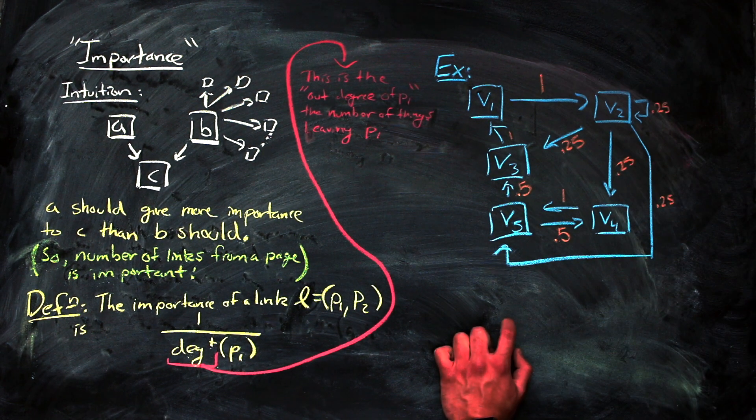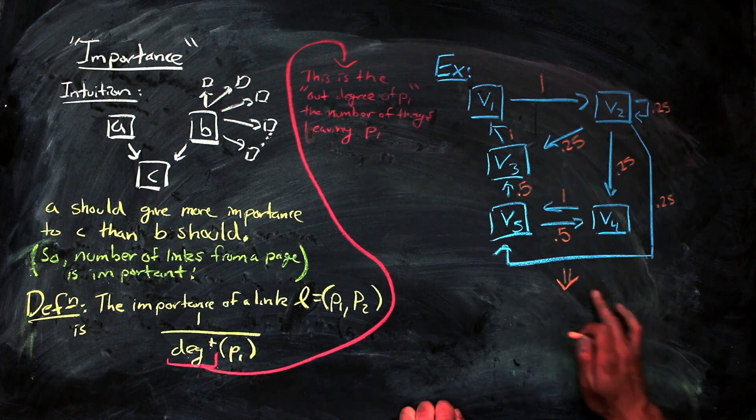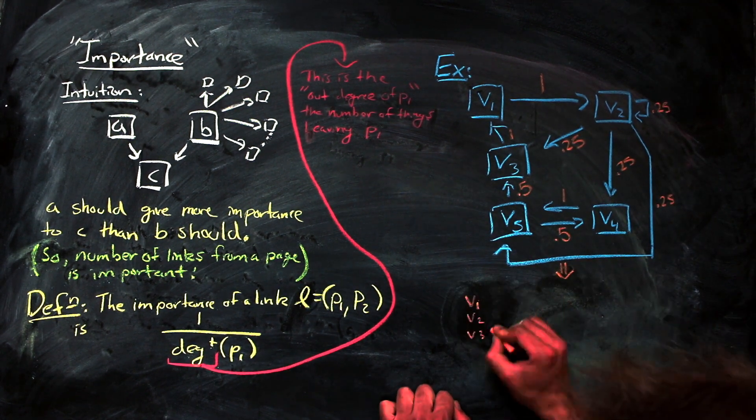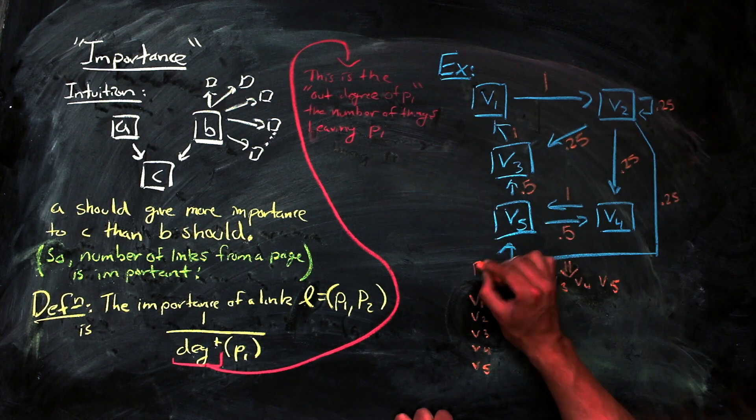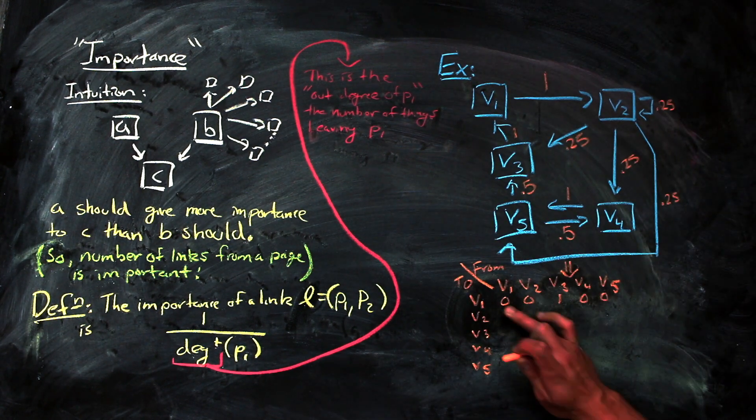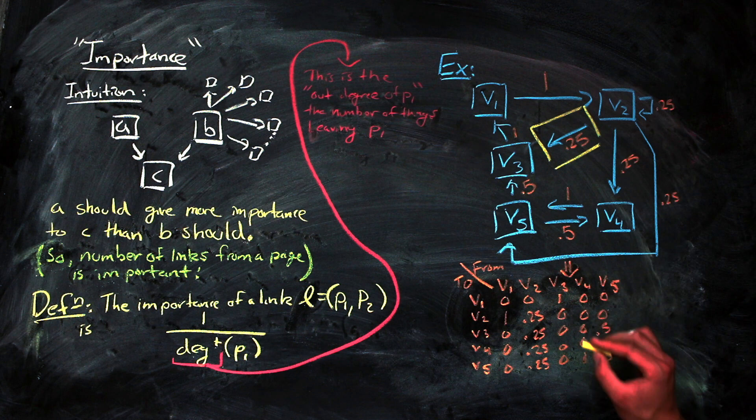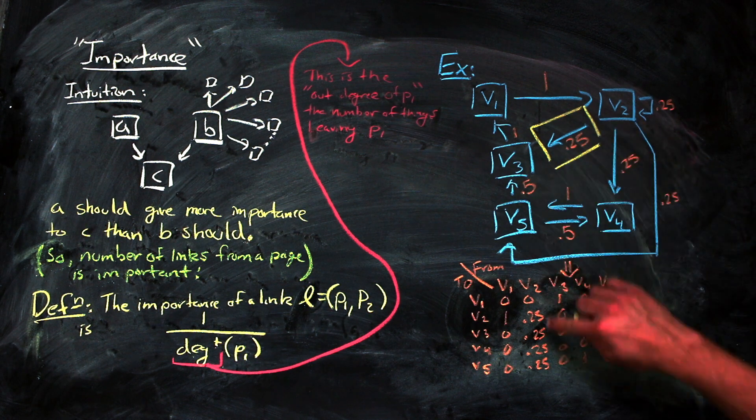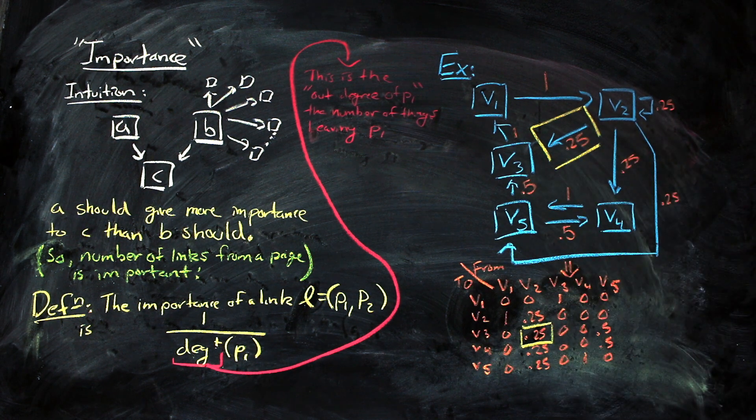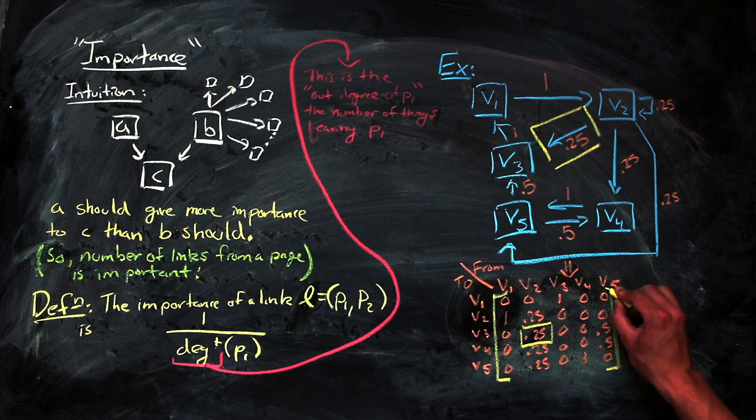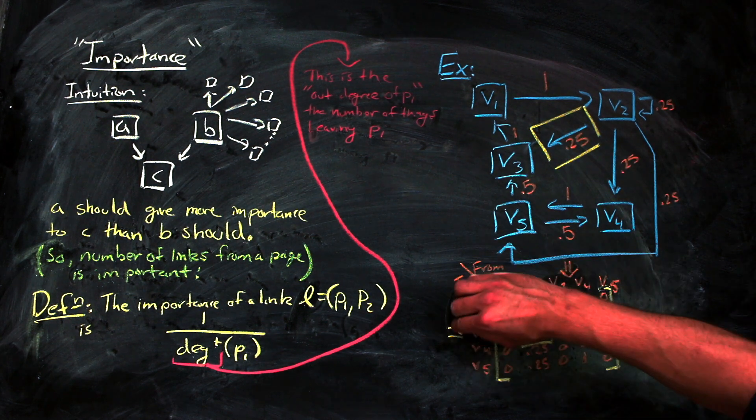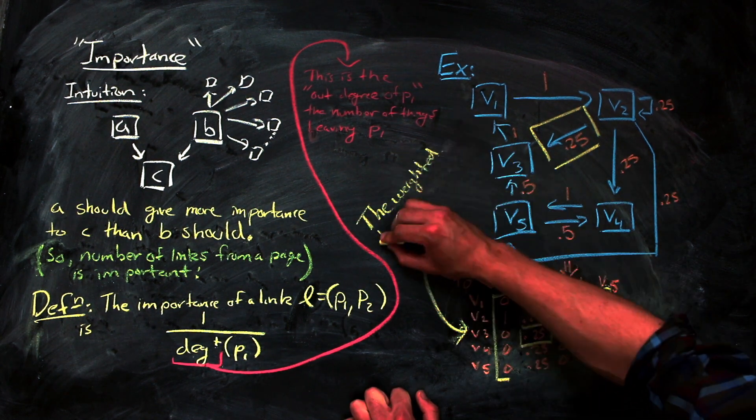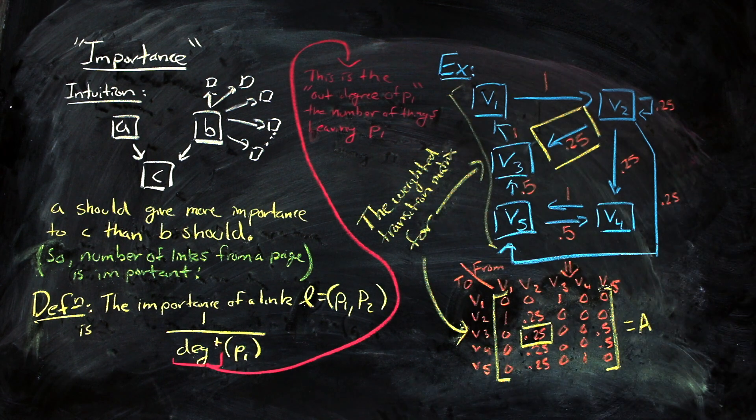We can organize the information in this graph by recording the importance values using a table, where the rows and columns are labeled with the vertices. We read from a column to a row. That is, for instance, the importance of the link from 2 to 3 is given by 0.25. What's really nice about this table is that it's just a weighted transition matrix for our directed graph. And so we can do some linear algebra with it.